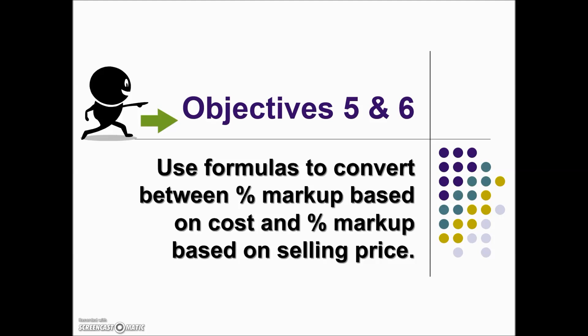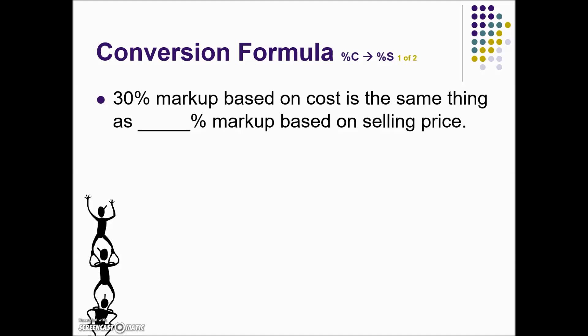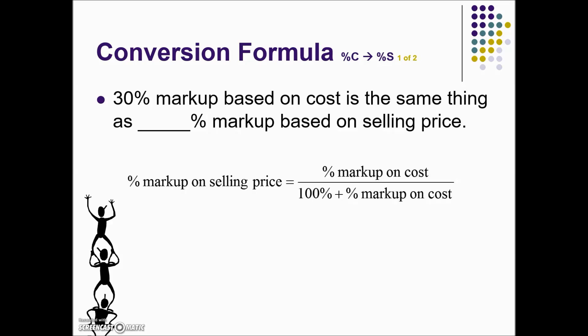Another method for markup comparisons is to use a conversion formula. Here we have the formula if we're looking to convert from a percent markup based on cost to a percent markup based on retail. We need to know our percent markup on cost — we'll take that divided by 100% plus the percent markup on cost to give us an equivalent selling price markup. Here we have our formula for converting markup percent on cost to markup percent on selling price. We're given a 30% markup based on cost — plugging that into our formula.